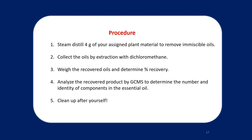To summarize your procedure for the week: we'll steam distill 4 grams of an assigned plant material, most likely cloves, to remove any immiscible oils present. The steam distillate will naturally include quite a bit of water, so we'll collect the organic oils using an extraction with dichloromethane. After rotary evaporating the dichloromethane, we'll weigh the recovered oils to determine the percent recovery — giving us a good estimate of what fraction of the original plant material was actually organic oil. Finally, we'll analyze the recovered product by GCMS to determine the number and identity of components in the essential oil.